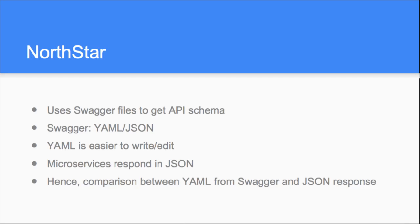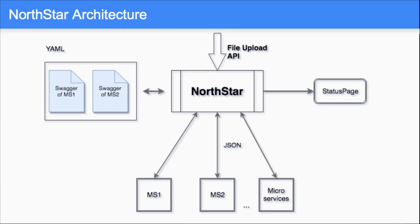It's a self-service portal where you have your Swagger file — it's all in your control. You just update your Swagger file as required. There's a file upload API, so every team has an app and a key, they upload their Swagger files, we store them, and every five minutes the pinger triggers and hits every microservice. The response comes in JSON, and the expected contract is defined in the Swagger file in YAML, so I have to compare YAML and JSON.